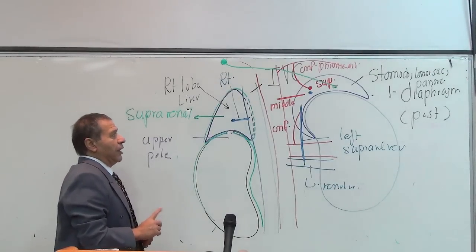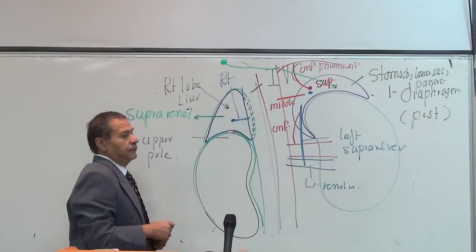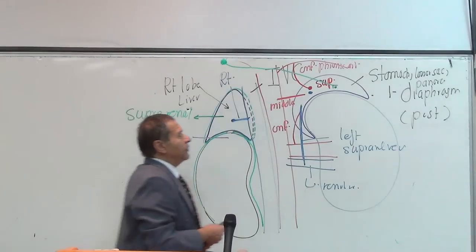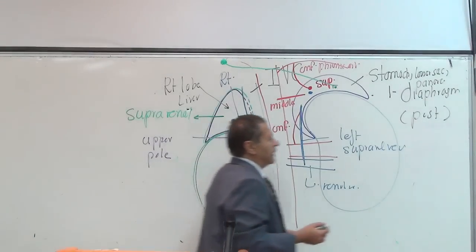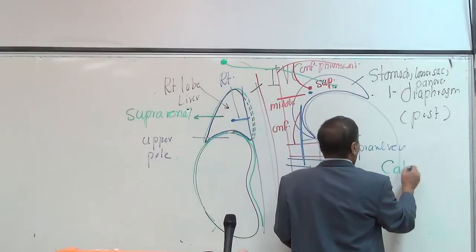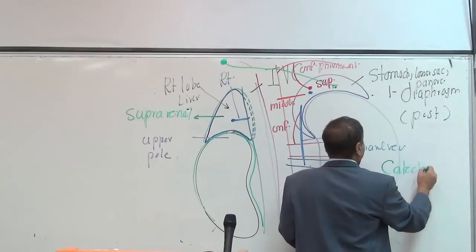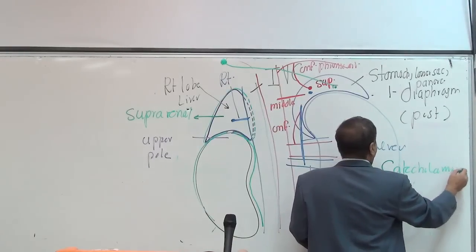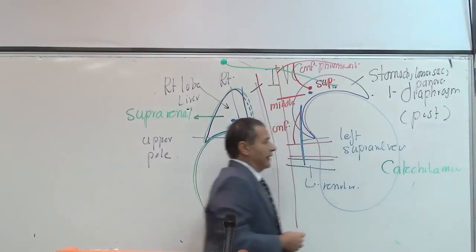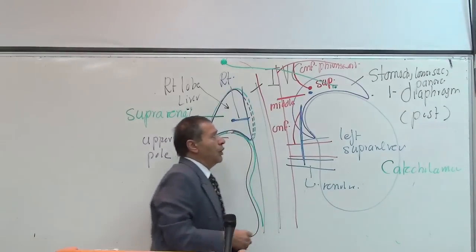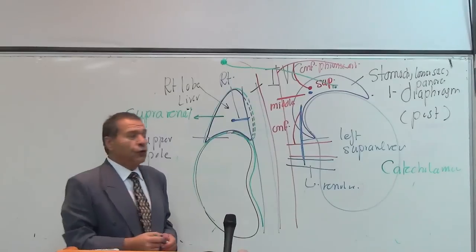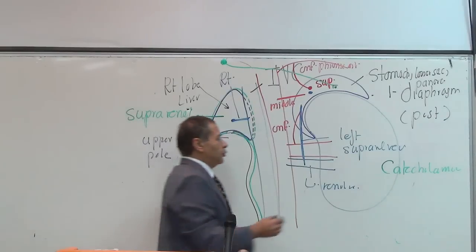Pre-ganglionic fibers supply the suprarenal gland, and it secretes catecholamines. One of the common tumors of the suprarenal gland is pheochromocytoma.